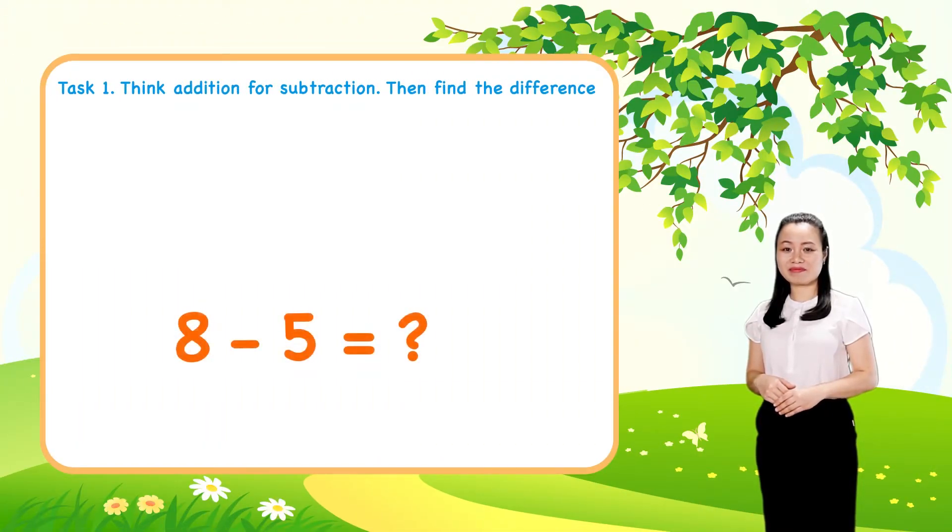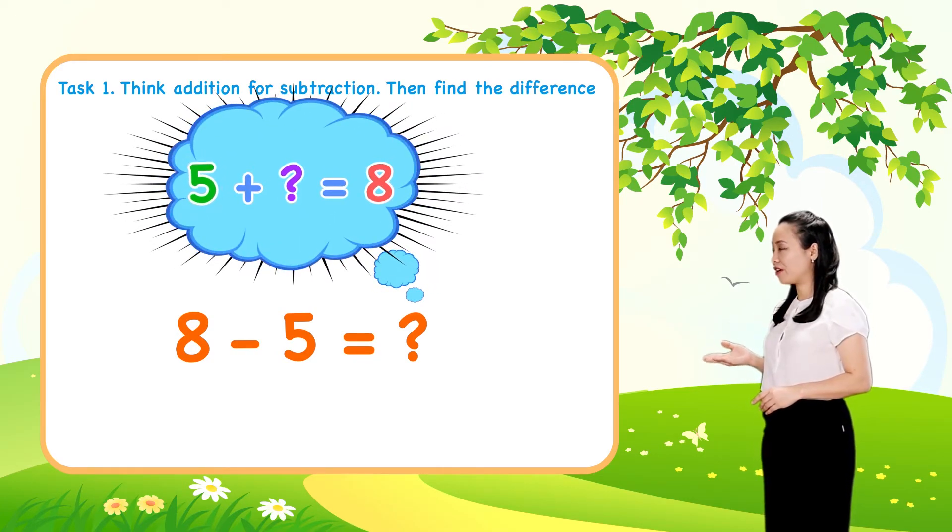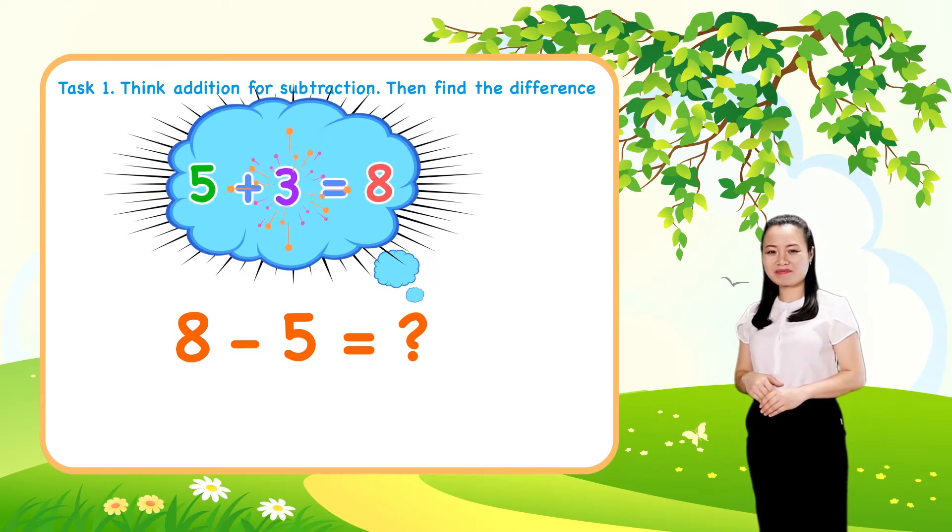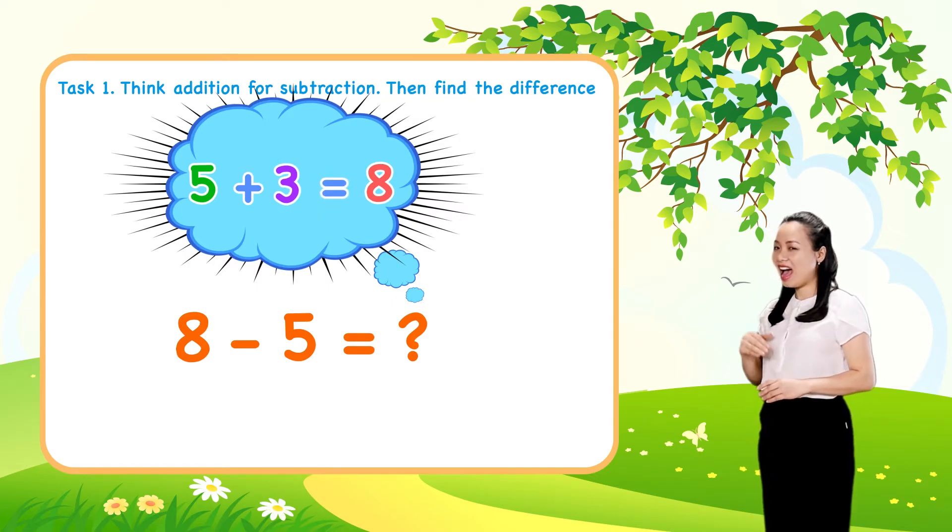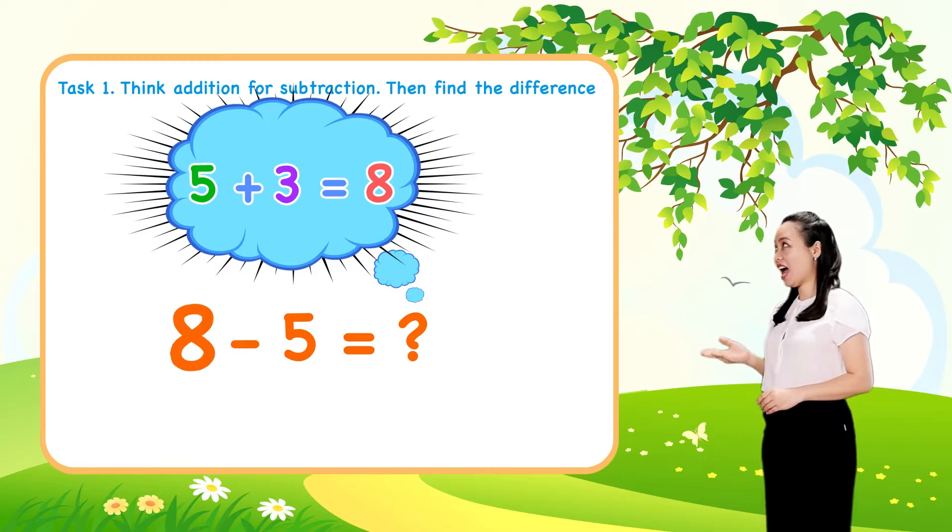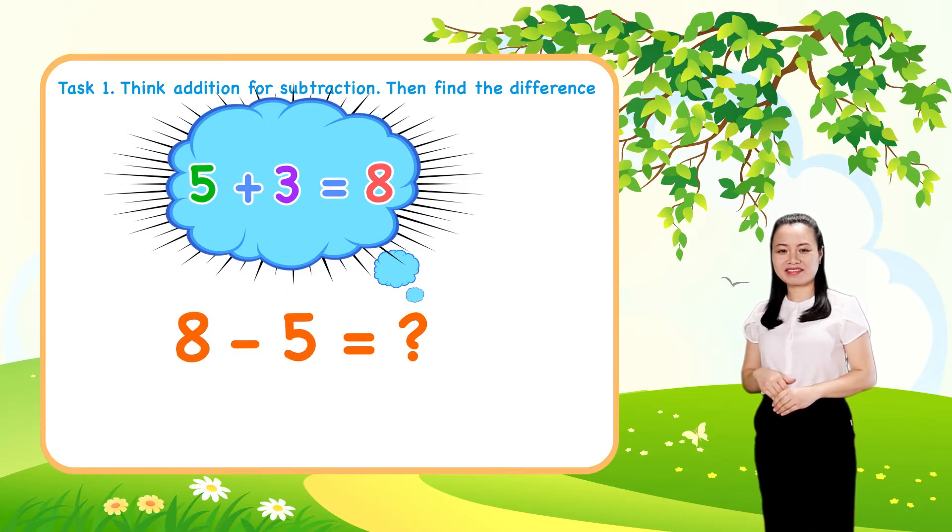Next, think 5 plus 3 equals 8. So 8 minus 5 equals 3.